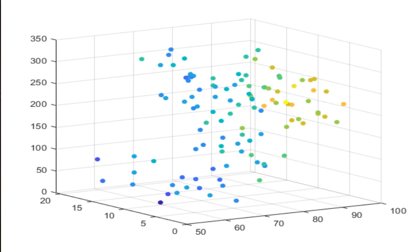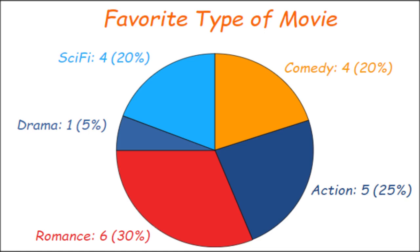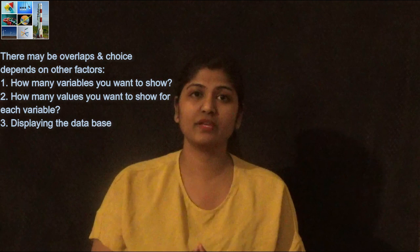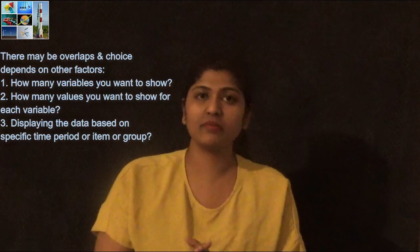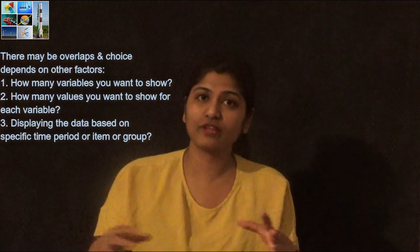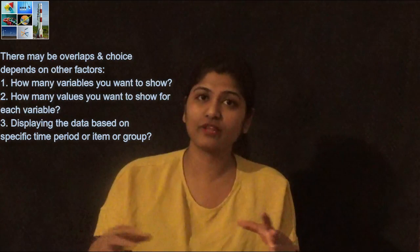In summary: bar charts are good for comparisons, line charts are good for showing trends and relationships, scatter plots are good for showing relationships and distributions, and pie charts can be used for composition — never for comparisons or distributions. The choice of data visualization also depends on other factors: how many variables you want to show, how many items per variable you want to display, and whether you're displaying values for a specific period of time or based on items or groups.